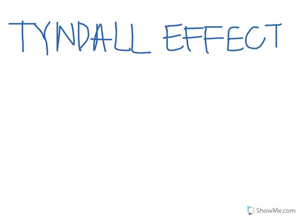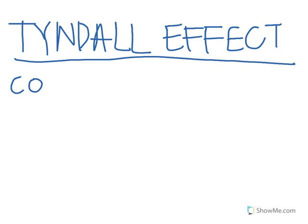Welcome to Kim with Alisa, and today we're going to be learning about the Tyndall effect. Colloids often look homogeneous because their individual particles are really small and you can't see them individually. But actually the particles are large enough to distort light.